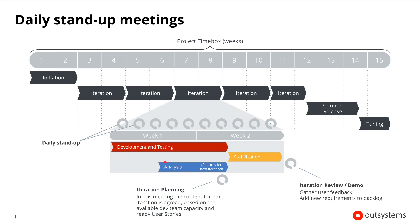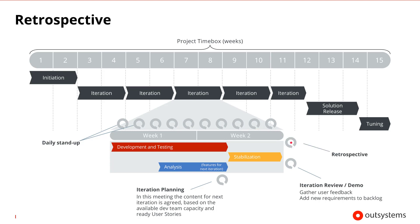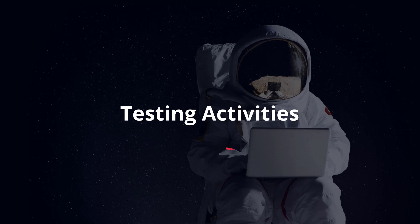Besides all the activities around user stories, each iteration also includes some team-specific activities, like daily stand-up meetings to discuss progress, status, and team alignment. At the end of each iteration, a retrospective is also done, focused on the continuous improvement of the team and the overall delivery process. Given that summary of what happens in an iteration, what are the testing activities and when are they done?